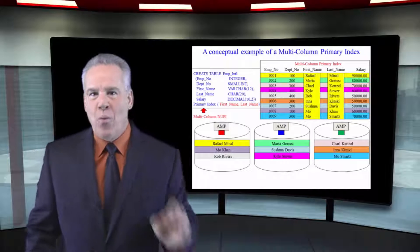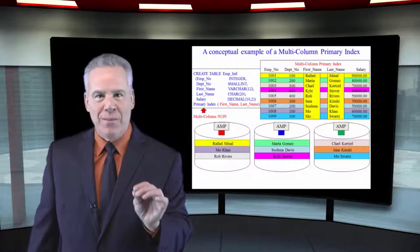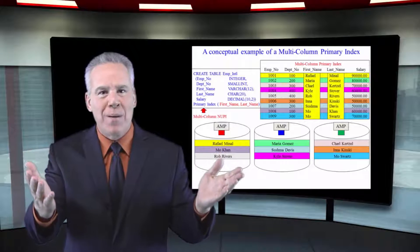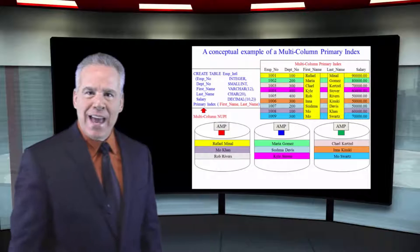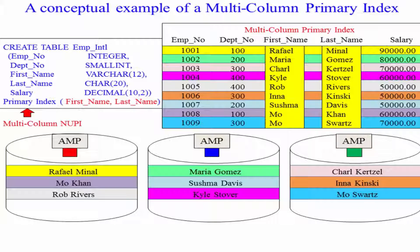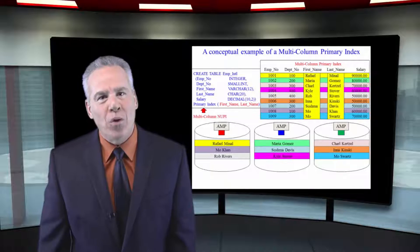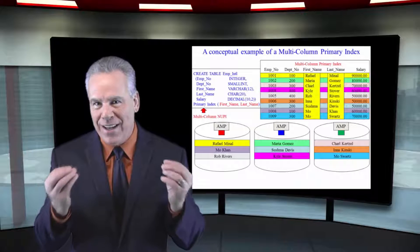You only have one primary index per table, like you only have one mom. But that doesn't mean mama can't have a hyphenated name. In this case, we only have one primary index and it's on first name and last name combined. That's a multi-column primary index.